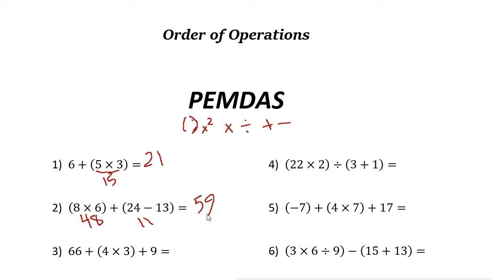Next one: we have addition, multiplication, and then addition. First, solve the parentheses — four times three is twelve. Then we only have addition remaining: sixty-six plus twelve is seventy-eight, plus nine is eighty-seven. The answer is eighty-seven.